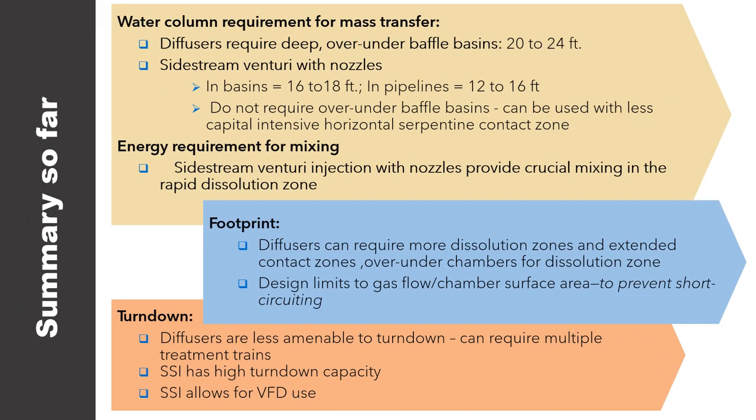To summarize, we want to look at water quality requirements for mass transfer. We want to compare the energy requirement for mixing. We want to compare the footprint and also compare the capability for turndown. A quick note on turndown: diffusers are slightly less amenable to turndown and can require multiple treatment trains, but it's easier to turn down with side stream systems by turning on or off additional injectors or using VFDs.